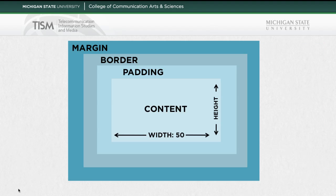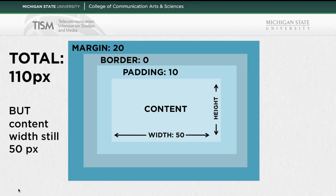So let's look at an example. Here we have a content width of 50 pixels, a padding of 10, no border so 0, and a margin of 20. The total for that is 110 pixels. You'll notice that the content width is still 50 pixels, even though the total width of everything taking up space on your page is 110 pixels.